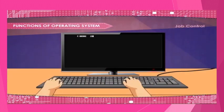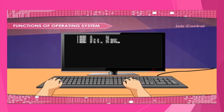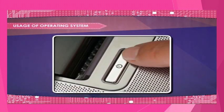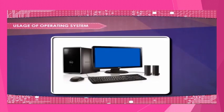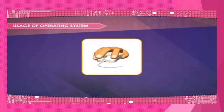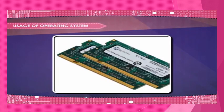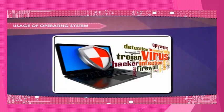Job Control: Using Operating System Job Control Language (JCL), the user can communicate with the operating system and tell it what to do. Usage of the operating system includes easy interaction between the user and computer, starting computer operation automatically after power on, loading and scheduling user programs, controlling input and output, controlling program execution, managing uses of main memory, and providing security to user programs.